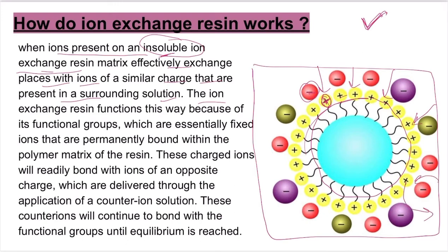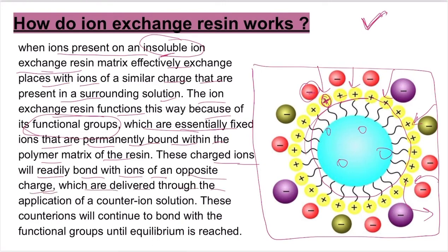The ion exchange resin functions this way because of its functional groups. Our resins have functional groups in the ion exchange, and these functional groups always have some charges, which are essentially fixed ions that are permanently bound within the polymer matrix of the resin. These functional groups are fixed and permanently bound within the resin. These charged ions will readily bind with ions of an opposite charge, which are delivered through the application of a counter-ion solution.